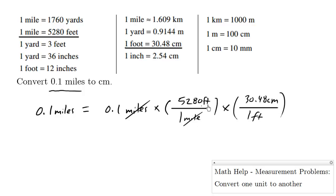However, we can just start cancelling diagonally and the units cancel out. And what we can do is find the answer miles to centimeters directly by multiplying 0.1 times 5280 times 30.48, which is approximately equals to 16,093 centimeters.